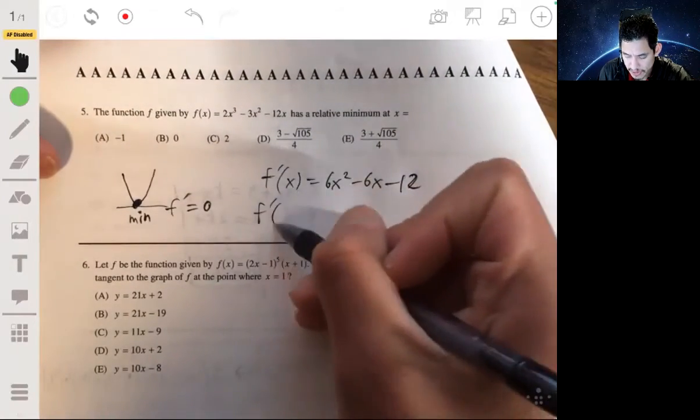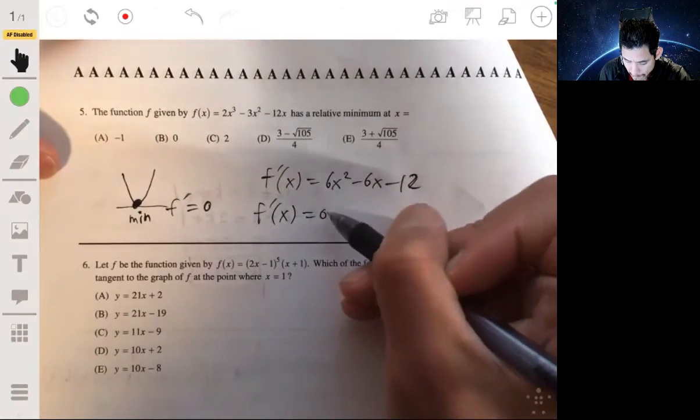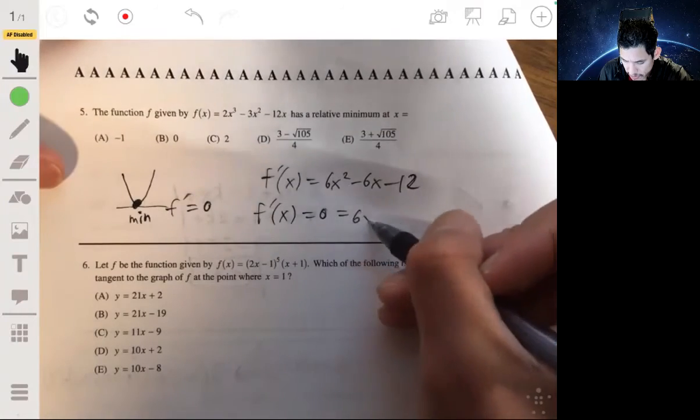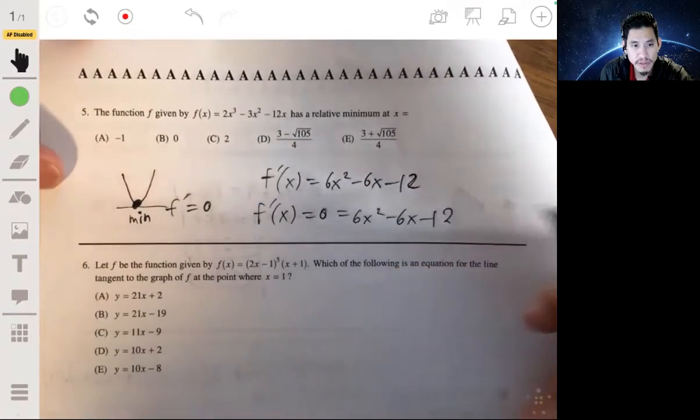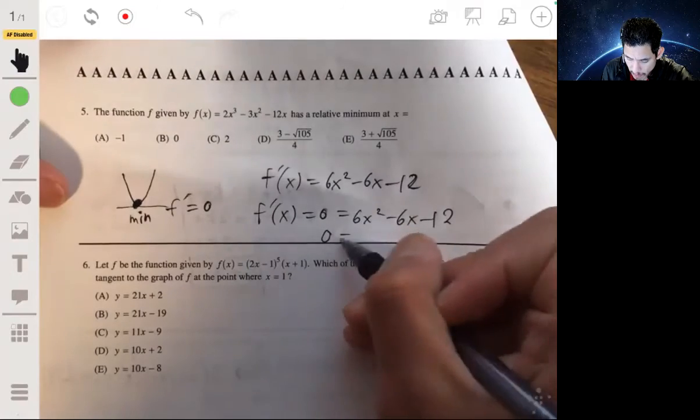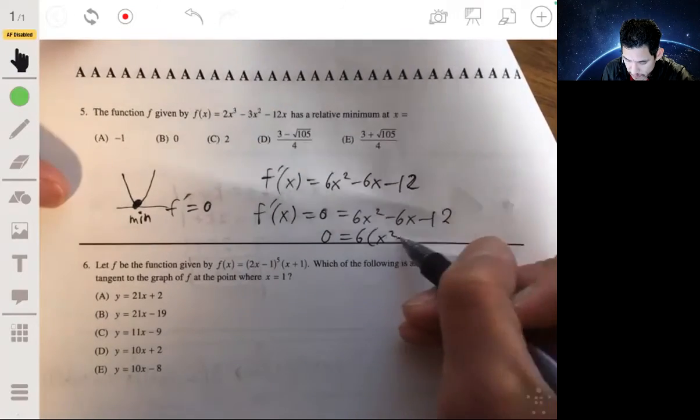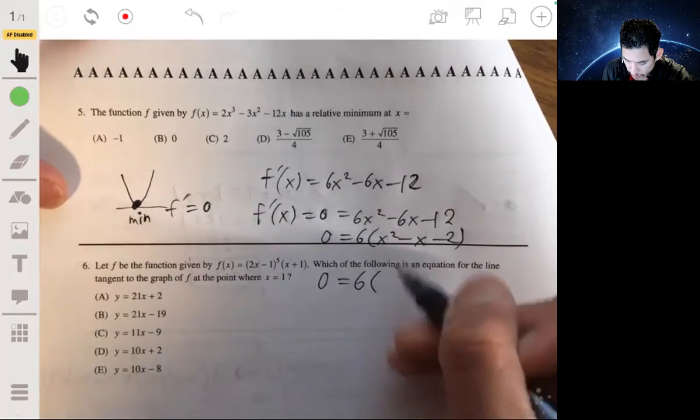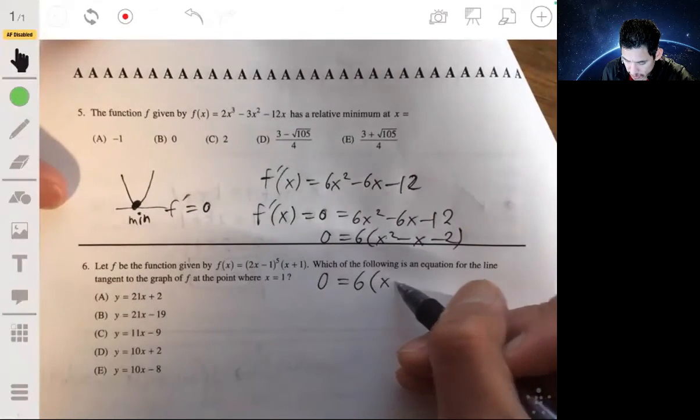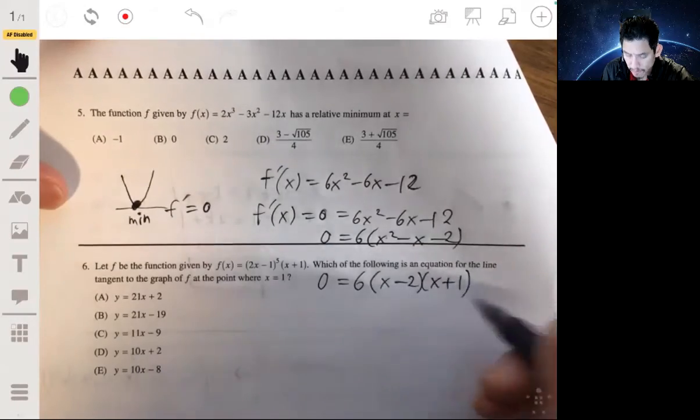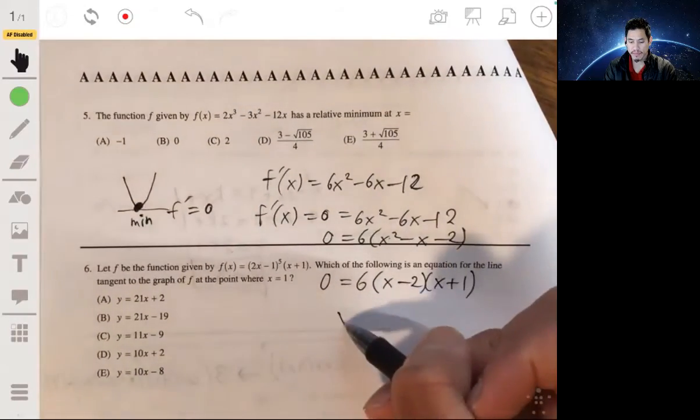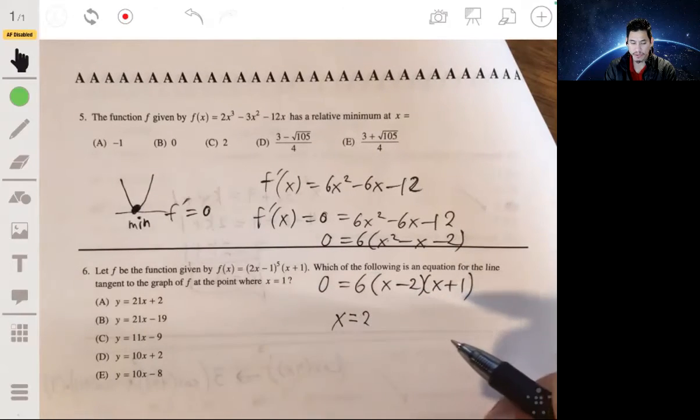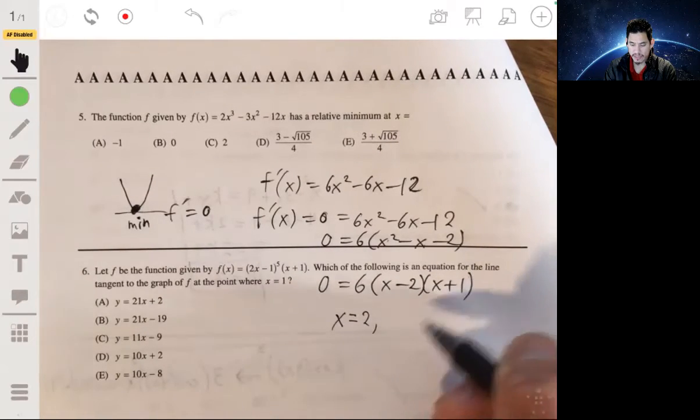f prime of x will be 6x squared minus 6x minus 12. Find the critical values by setting this equal to 0. So 0 equals 6x squared minus 6x minus 12. Factor out a 6. Factoring that, 6 times x minus 2 times x plus 1. So there are critical points at x equals 2 and x equals negative 1.